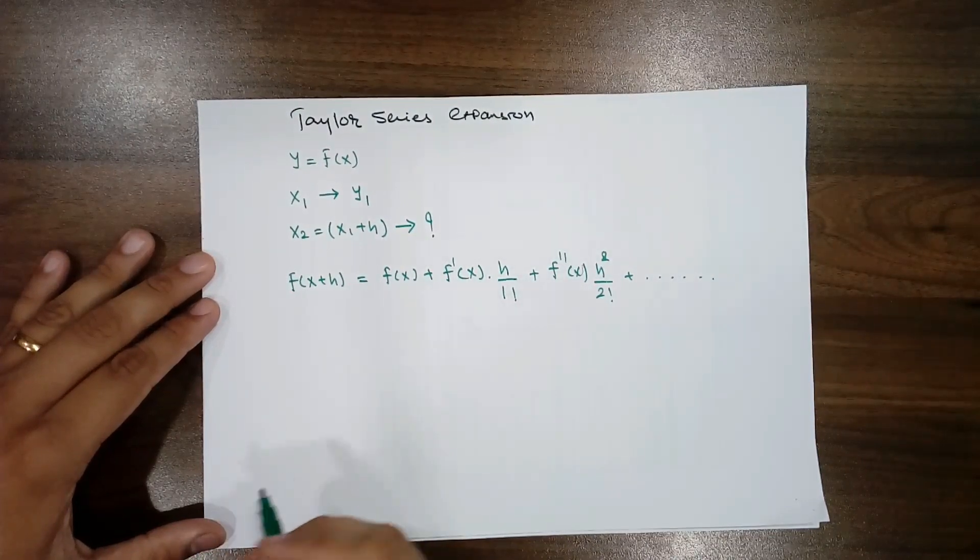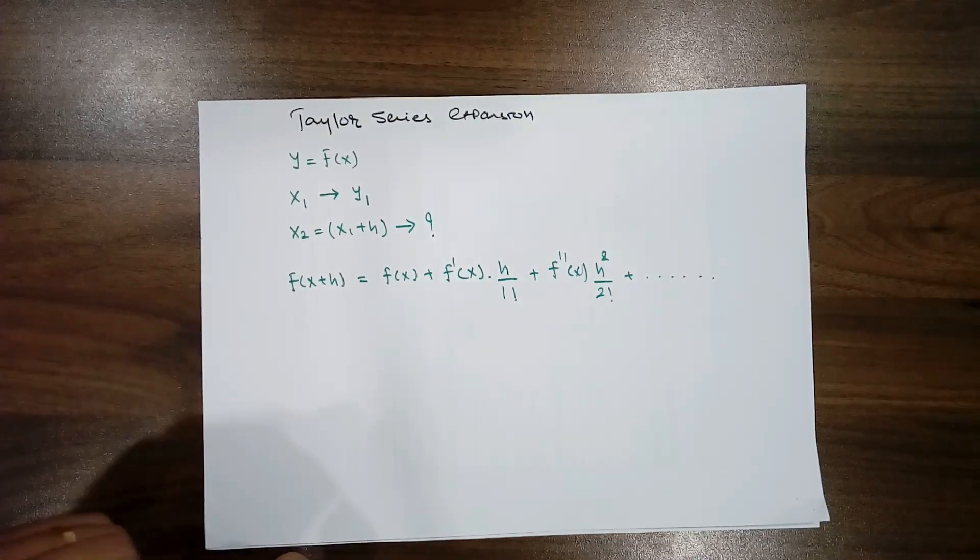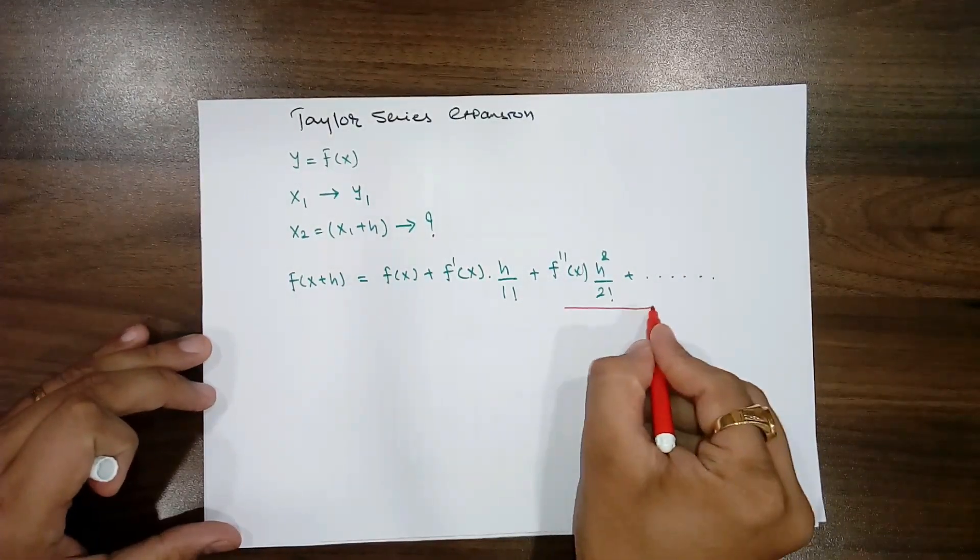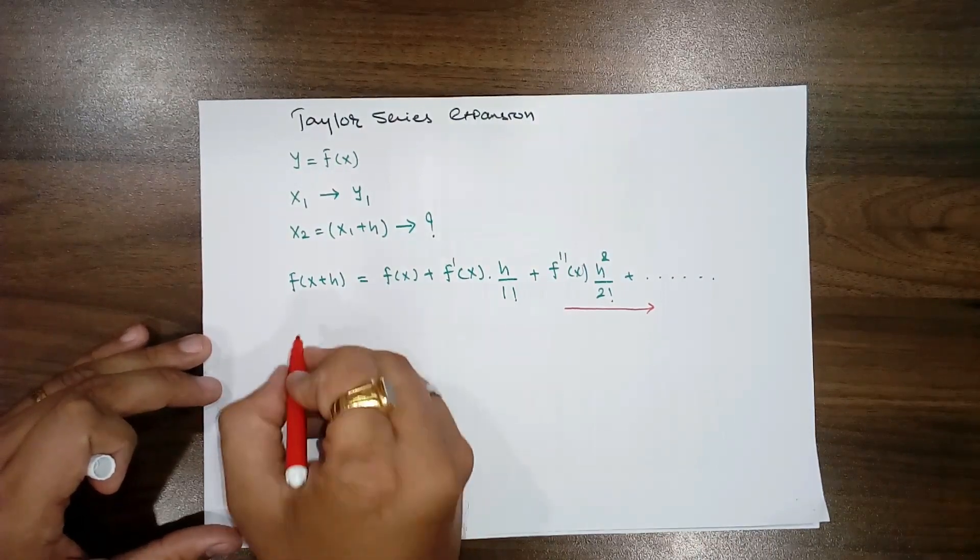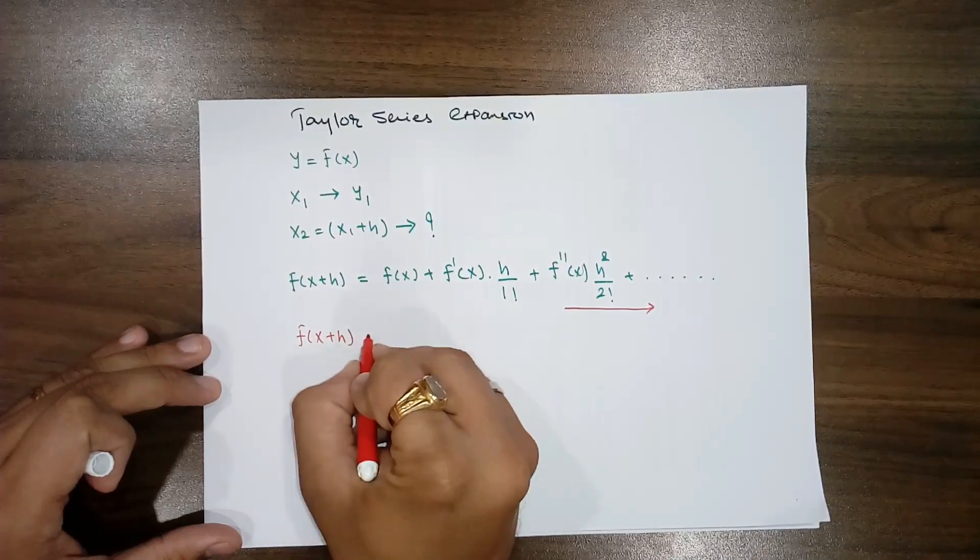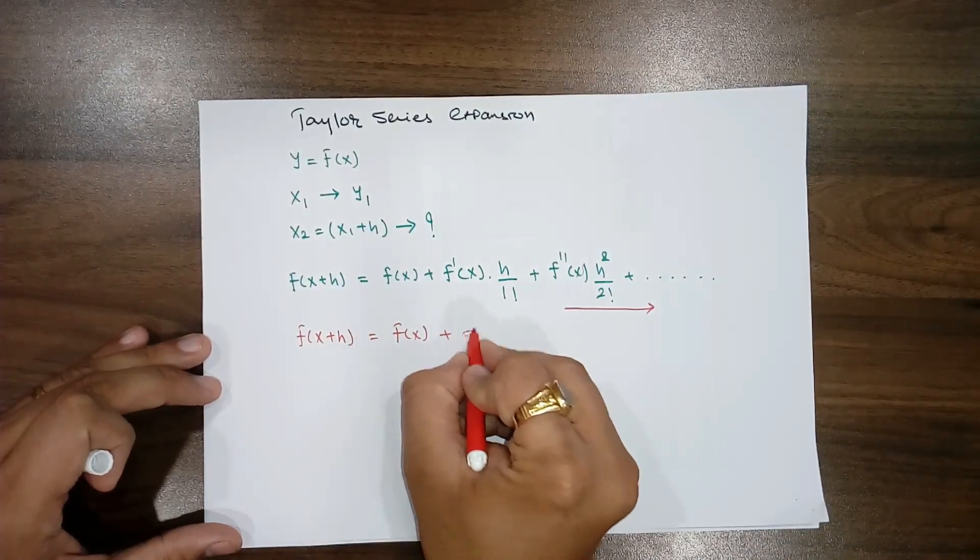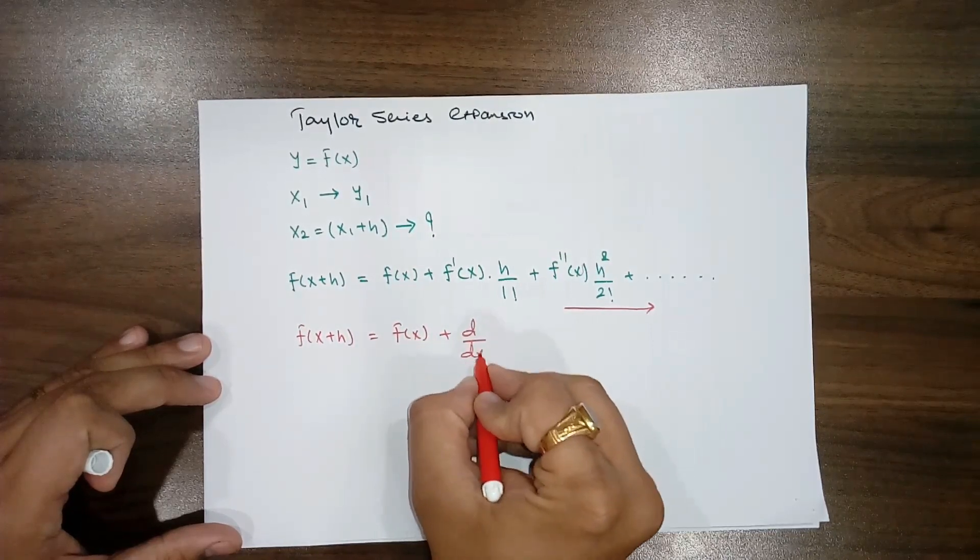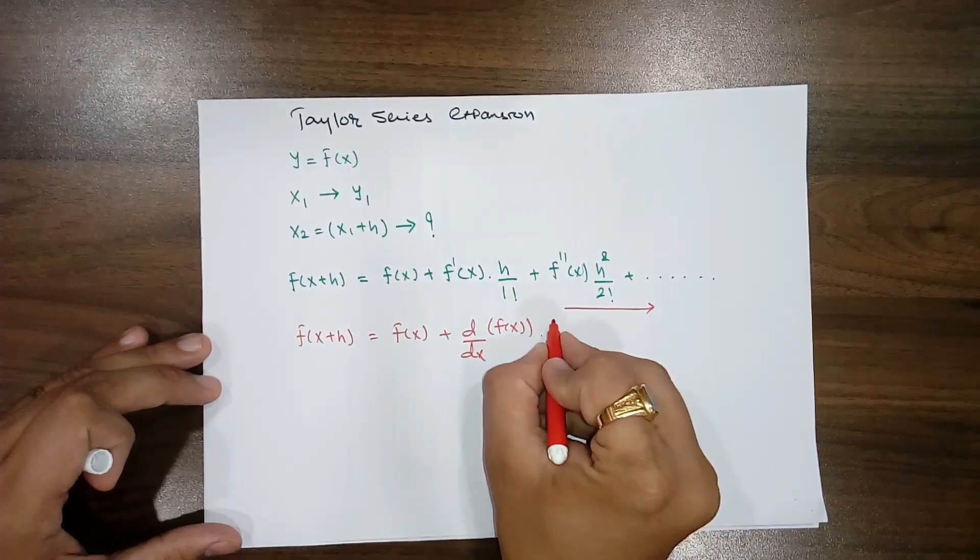But in general practices, the terms which is having higher derivatives, suppose this is from higher order derivatives that is second order and third order, those terms we are neglecting, and our equation becomes f of x plus h equals to f of x and if you write a derivative in the form of d by dx of f of x into h.